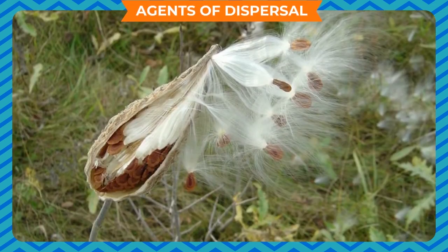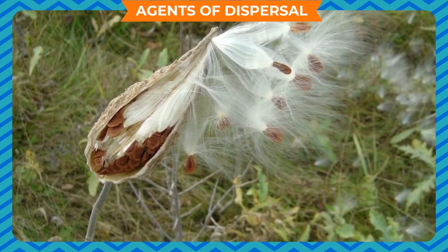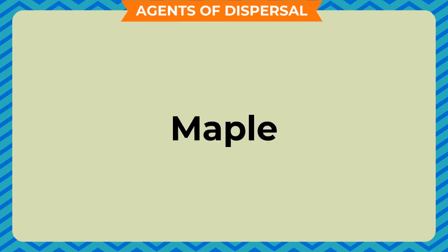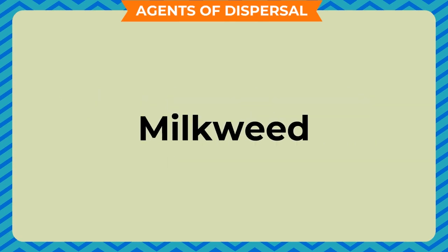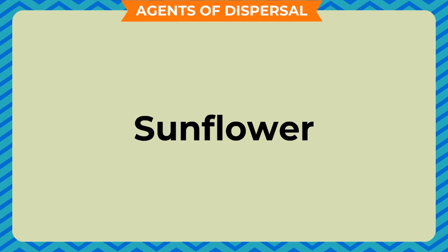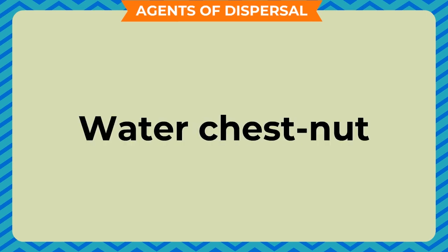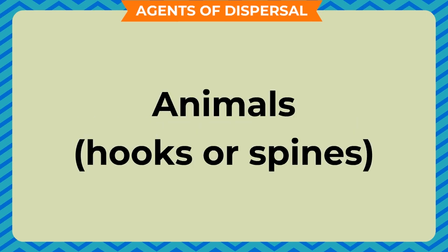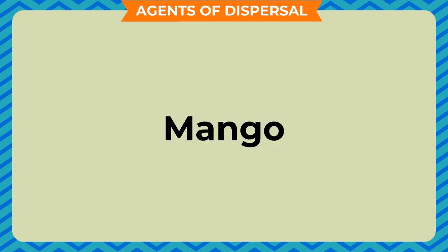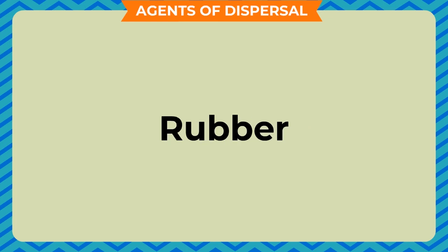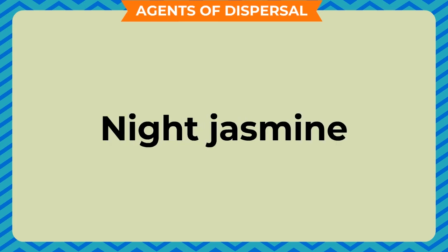Agents of Dispersal: Wind — seeds with wings or hairs, like maple, milkweed, cotton, sunflower. Water — fruit or lightweight seed coat, like coconuts, lotus, water chestnut. Animals — hooks or spines, like mango, guava, xanthium. Explosion — like rubber, balsam, nightchasmin.